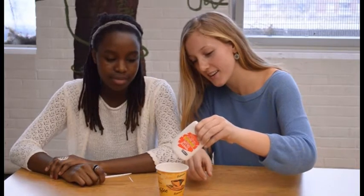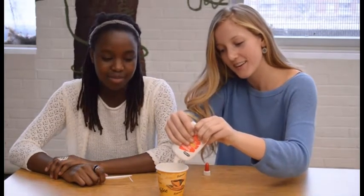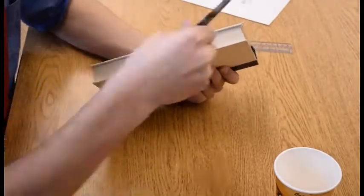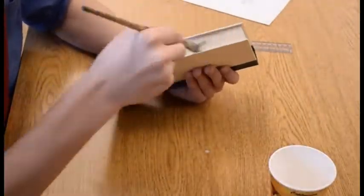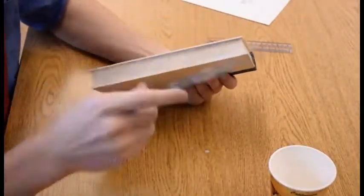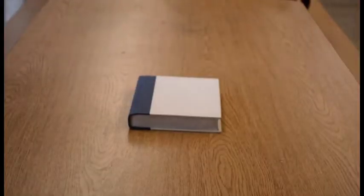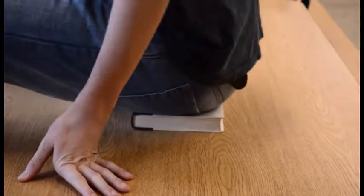First, mix the glue with some water to make watered down glue. Next, dip your paintbrush in the glue and apply generously to the sides of the book. Now, let the book dry for 20 minutes with pressure applied on top.